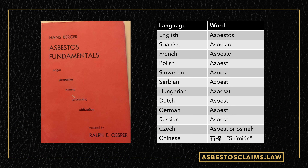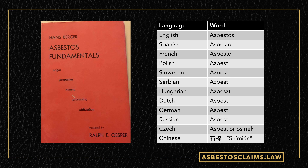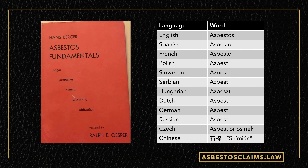I also have a book called Asbestos Fundamentals, written in German and translated by Mr. Ralph Osper. It has a handy chart showing the different words for asbestos in different languages, and you can see that for everything except Chinese, they're all pretty similar. I believe the word in Chinese is pronounced shim yon. Every one of these countries had their own word for asbestos because they all used it.